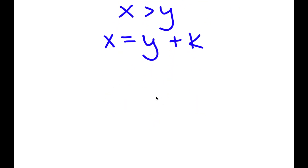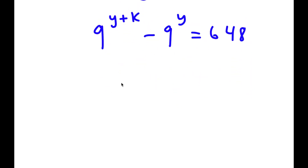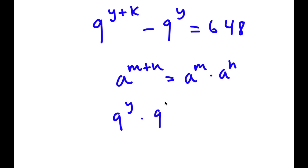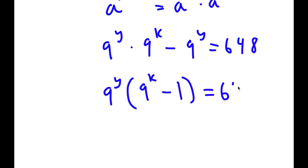I can replace x with y plus k. So now I have 9 to the power of y plus k minus 9 to the power of y is equal to 648. If I have something in the form a to the power of m plus n, this equals a to the power of m times a to the power of n. So 9 to the power of y plus k equals 9 to the power of y times 9 to the power of k, minus 9 to the power of y equals 648. Now I'm going to factor out 9 to the power of y. So I get 9 to the power of y times 9 to the power of k minus 1 is equal to 648.